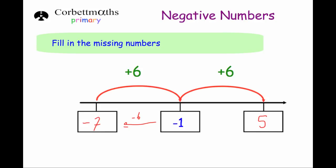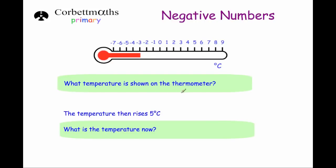Our next question says: what temperature is shown on the thermometer? The temperature shown is minus three degrees Celsius. The question then says the temperature rises five degrees Celsius — what temperature is it now? So we just need to go five to the right: one, two, three, four, five. And the answer would be two degrees Celsius.